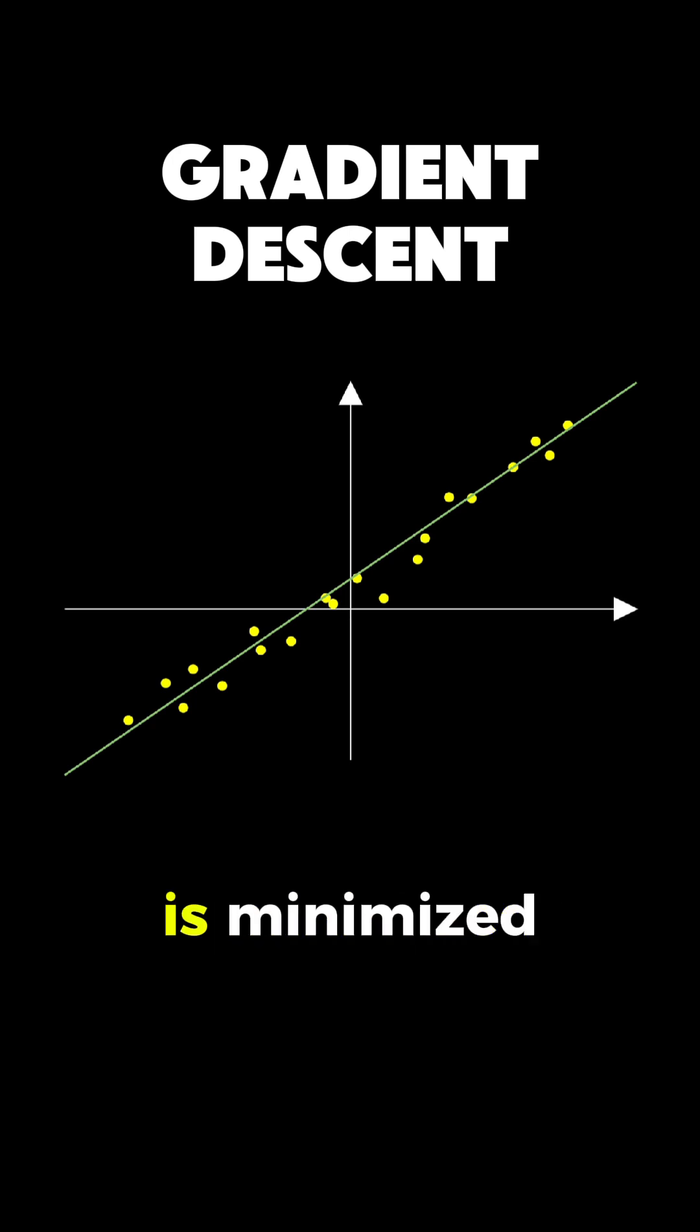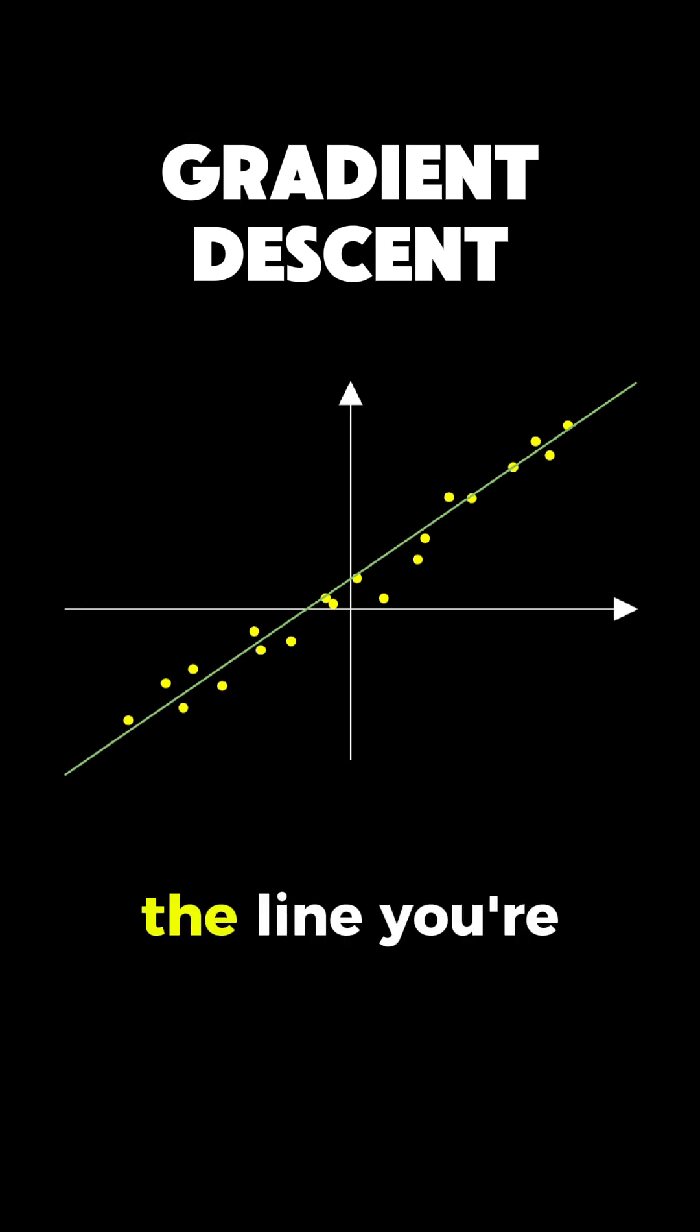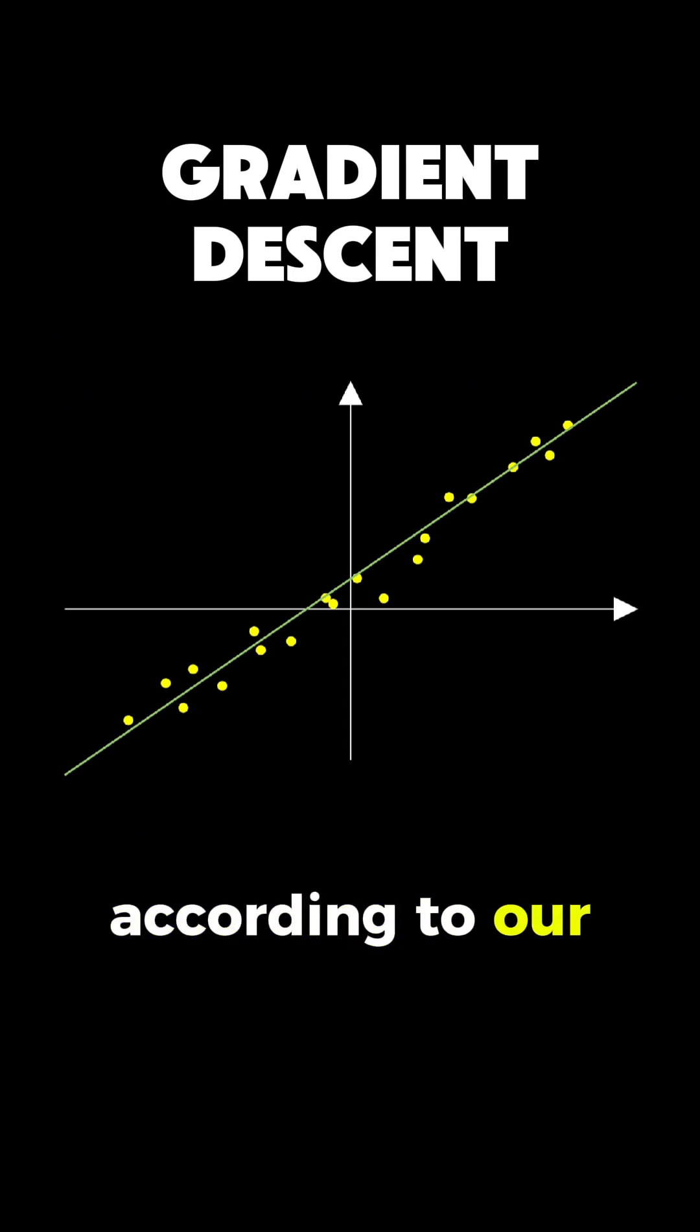The beauty of linear regression is that it gives us a mathematical guarantee. The line you're seeing is literally the best possible straight line through these points according to our error measure.